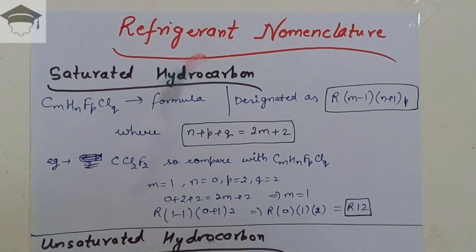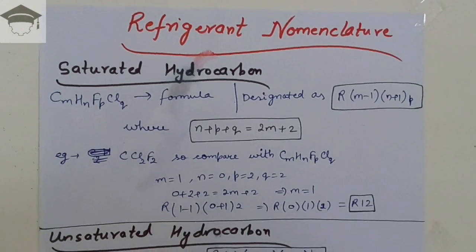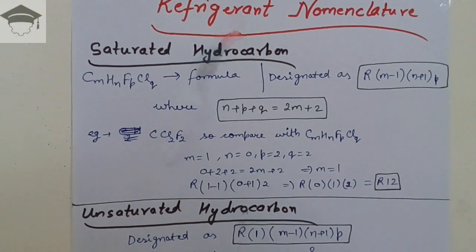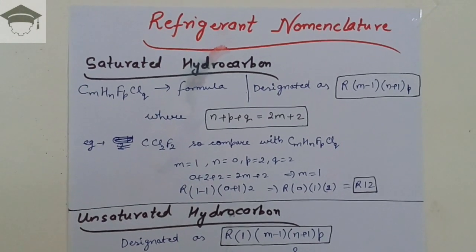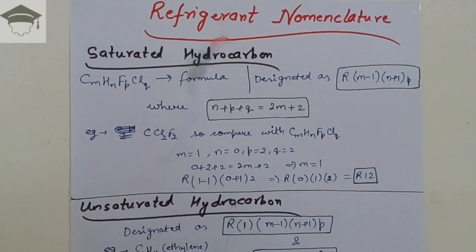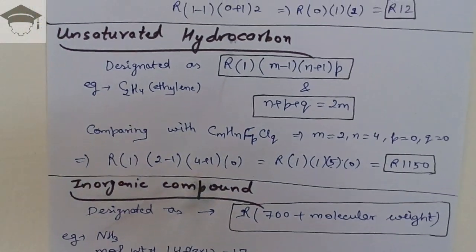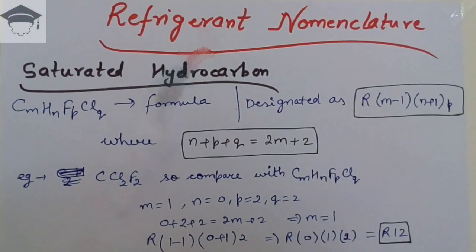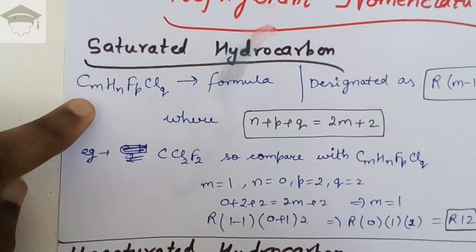Do follow me on Facebook, Google Plus, and Twitter — all the links are given in the description. Do watch my other videos also. Now, refrigerant nomenclature: it is basically classified into three types. The refrigerant can be classified into saturated hydrocarbon, unsaturated hydrocarbon, and inorganic compounds.